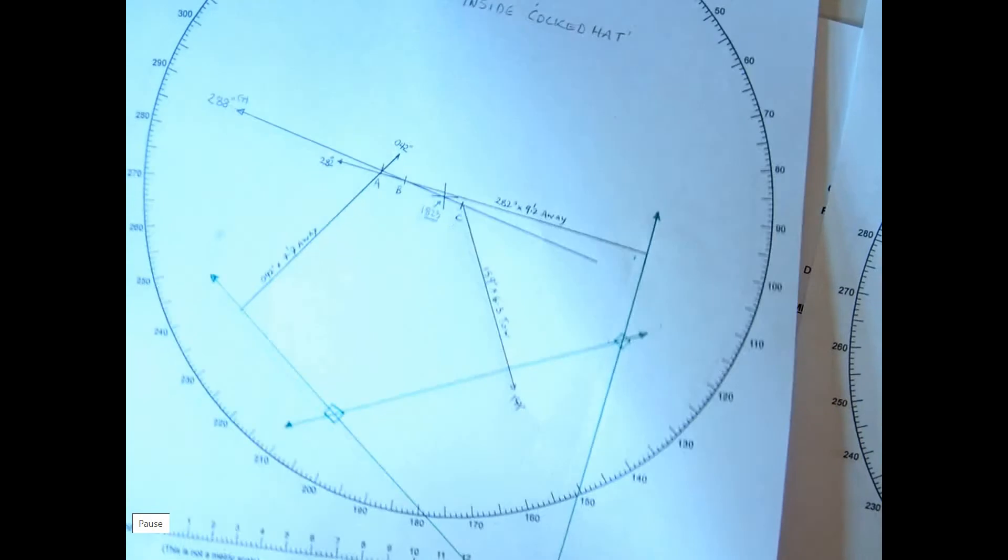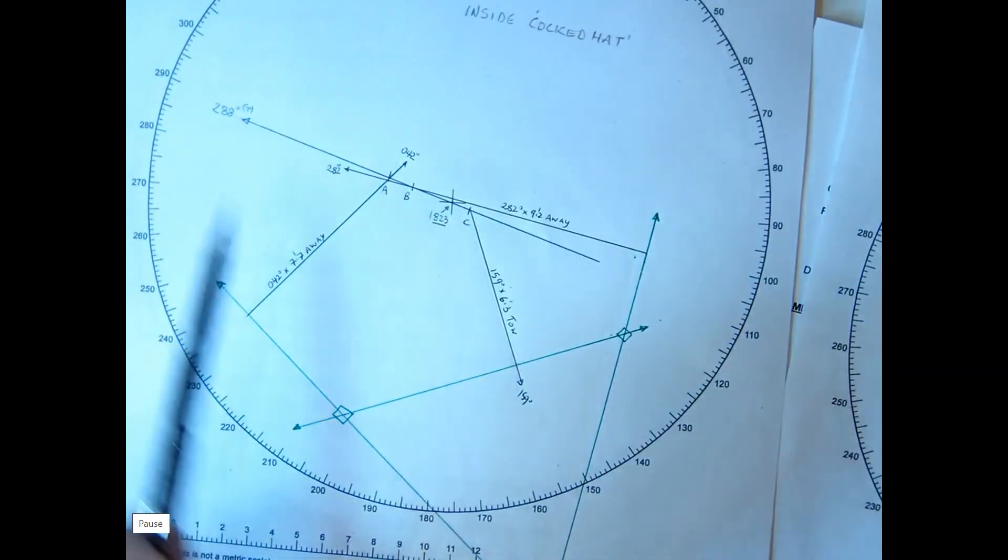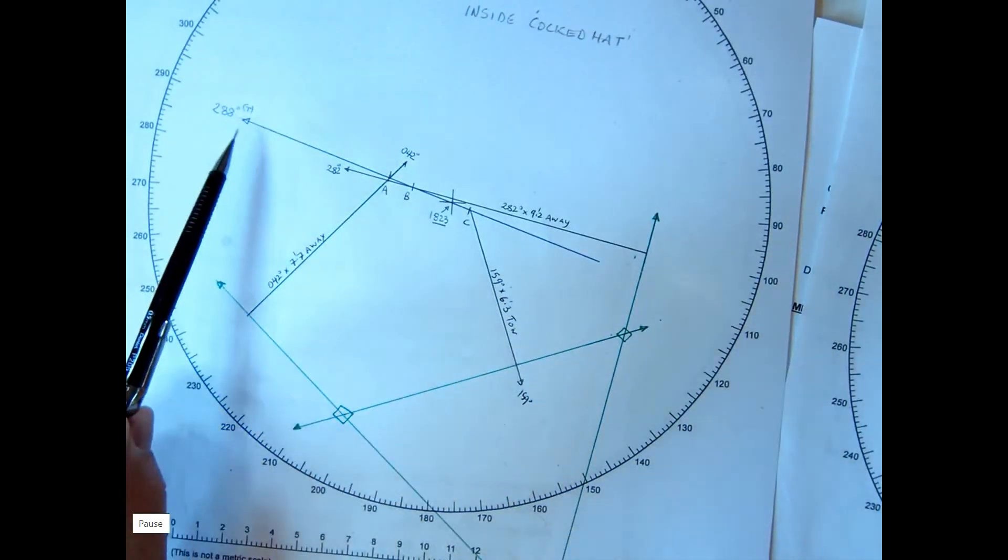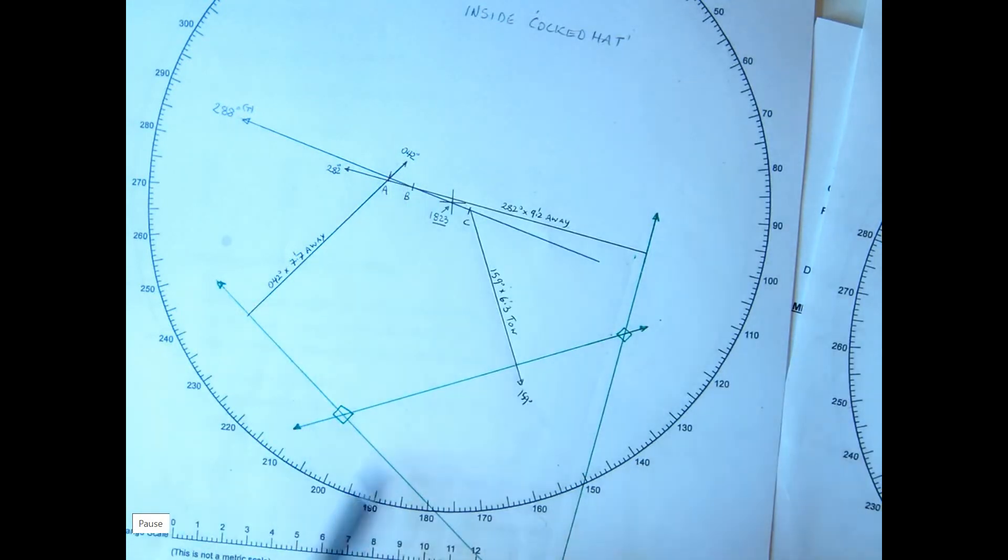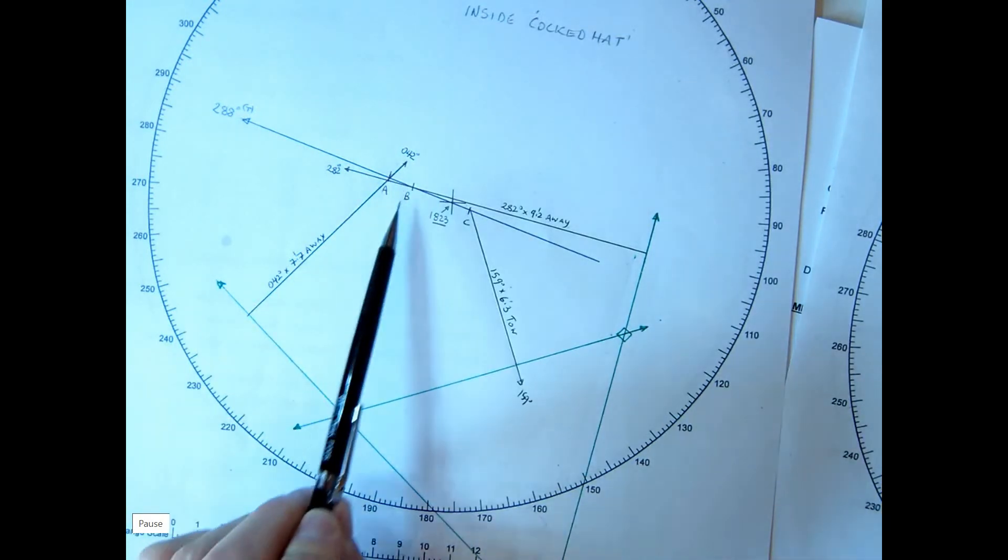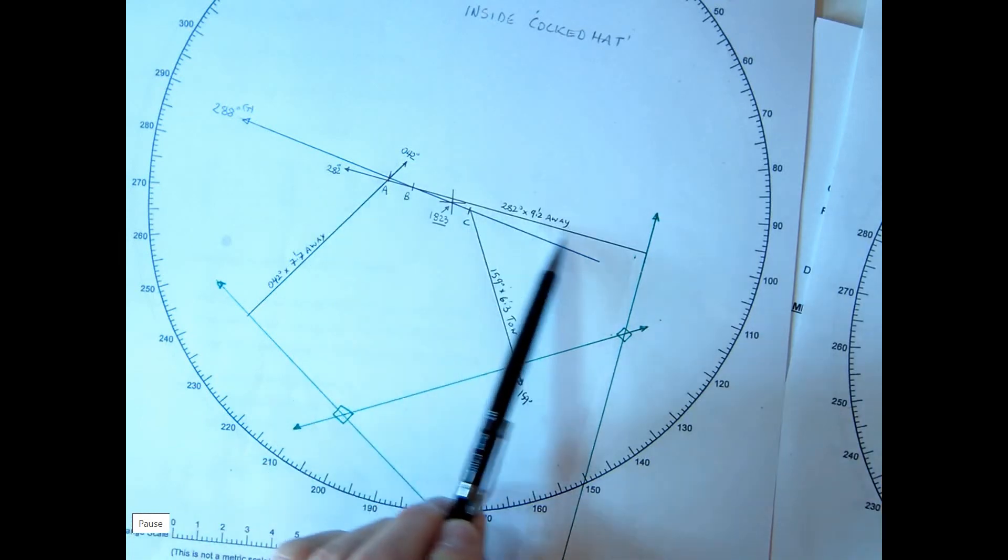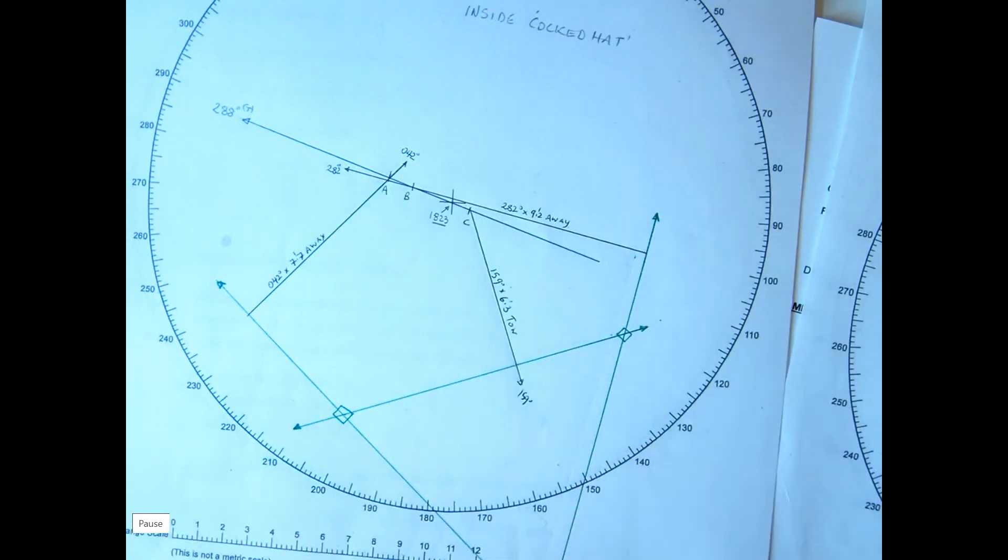So let's have a look at the first sketch. There's our course of 280. Star A, 042, 7.7 away. B, 282, 9.2 away. And C, 159 at 6.3 towards. OK, so that's the three.